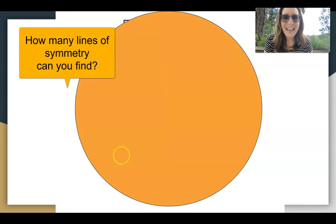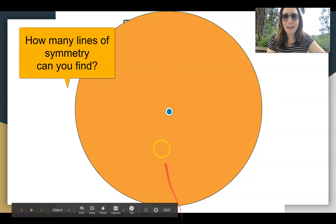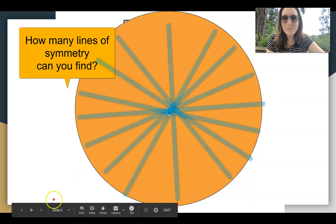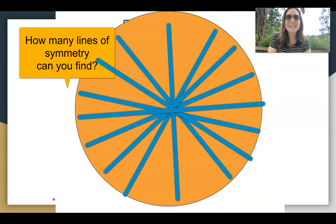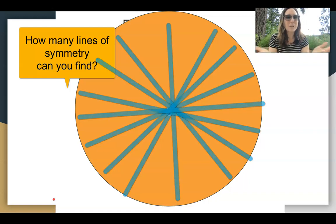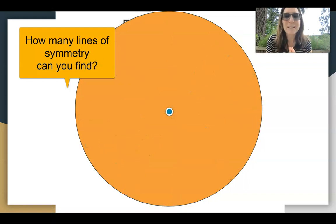What about a circle? How many lines of symmetry do you think a circle has? Now remember, a line of symmetry has to go right through the middle of the circle. And so we can fold it in half this way, and this way, and this way, and this way. Because we could keep folding it in half different ways and they would always be equal on both halves.